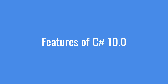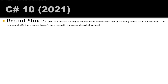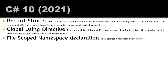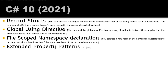C# 10.0 in 2021 introduced record structs — you can declare value type records using 'record struct', and clarify reference type records with 'record class'. Global using directives let you add a global modifier to any using directive, applying it to all source files in the compilation. File-scoped namespaces provide a new form of namespace declaration scoped to a single file. Extended property patterns allow referencing nested properties within pattern matching.